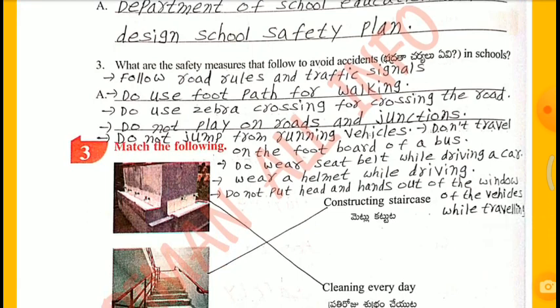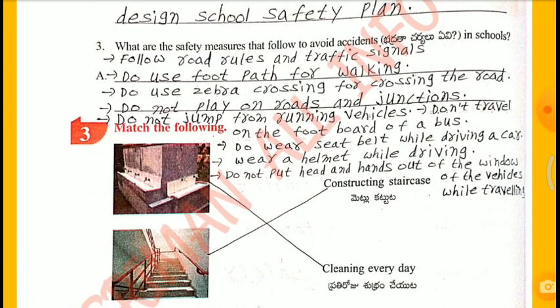What are the safety measures to avoid accidents in schools? Follow road rules and traffic signals. Use footpath for walking. Use zebra crossings for crossing the road. Do not play on roads and junctions. Do not jump from running vehicles. Don't travel on the footboard of buses. Do wear a seatbelt while driving a car. Wear a helmet while driving. Do not put head and hands out of the windows of vehicles while traveling.